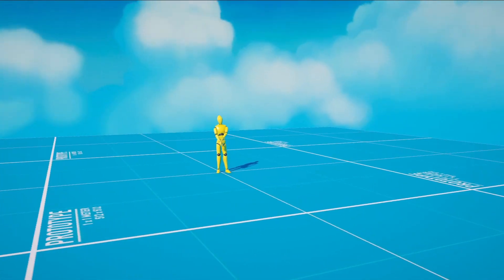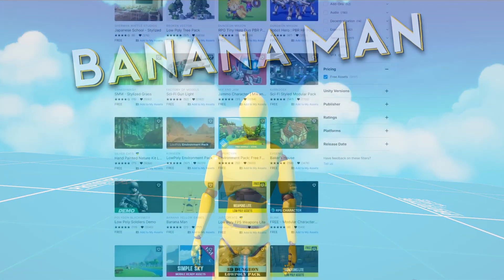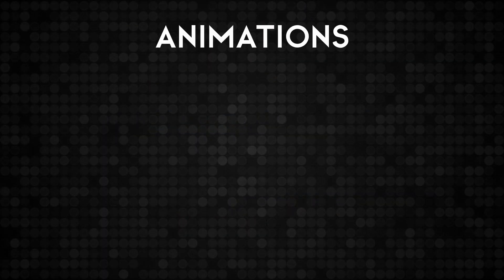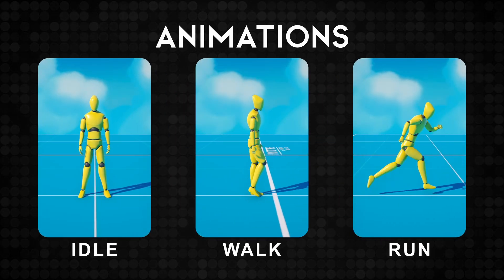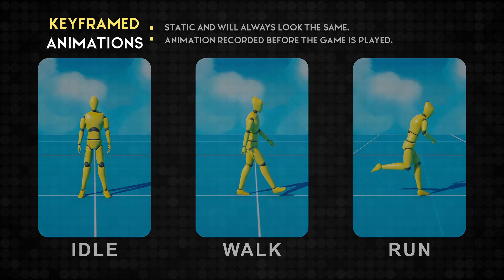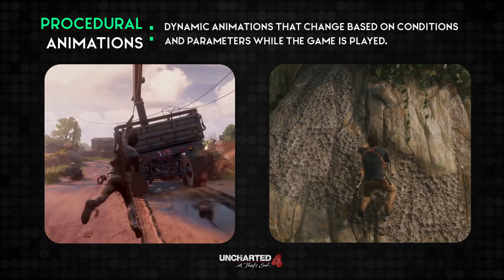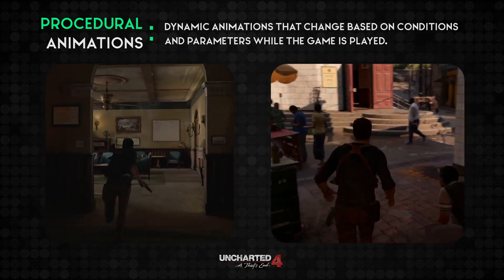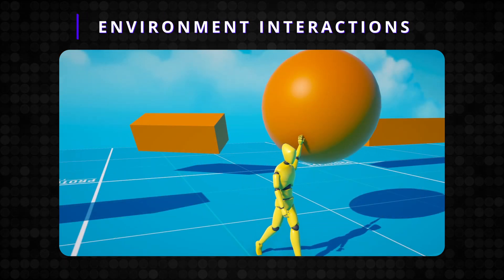In today's Unity project, we have the character Banana Man making its infamous return to the channel. Banana Man can be downloaded for free directly from the asset store. Banana Man can stand, walk, and run. All three of these animations are keyframed animations, meaning they are static and always look the same. We'll be learning to make procedural animations, which are dynamic animations that change based on specific conditions or parameters while the game is being played. In this project, our procedural animations will be programmed to have our character interact with specific objects in the game environment.